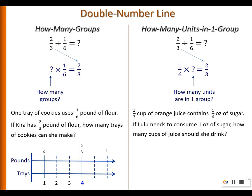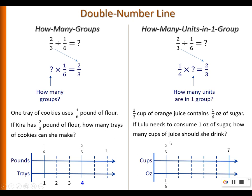For the 'how many units in one group' type, here is a story problem: 2/3 cup of orange juice contains 1/6 ounce of sugar. If Lulu needs to consume one ounce of sugar, how many cups of juice should she drink? Using a double number line, the relationship is: 1/6 ounce of sugar corresponds to 2/3 cup of orange juice, and we are asking how many cups correspond to one full ounce.